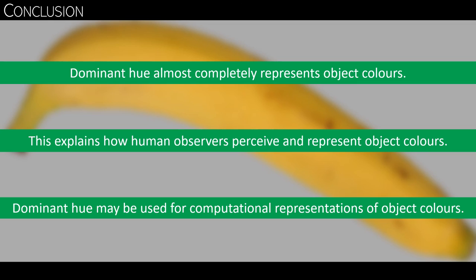This implies that the dominant hue is pretty much representative of the full color distribution. And these results explain how human observers perceive and represent the colors of objects.